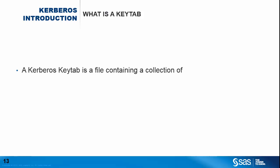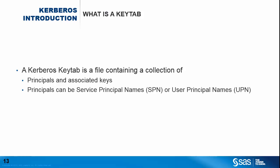So what exactly is a Kerberos Keytab? The Kerberos Keytab is a file in a specific format which can contain multiple entries. It contains a collection of principals and the key associated with each principal — the key is associated with the password for that principal. The principals in the Keytab can either be service principal names or user principal names. And the keys associated with each principal can be encrypted using different encryption algorithms, meaning for a single principal you might have several different entries corresponding to each encryption type.